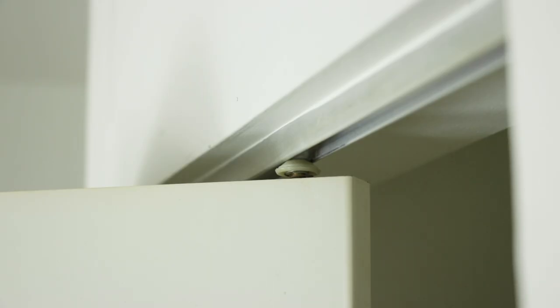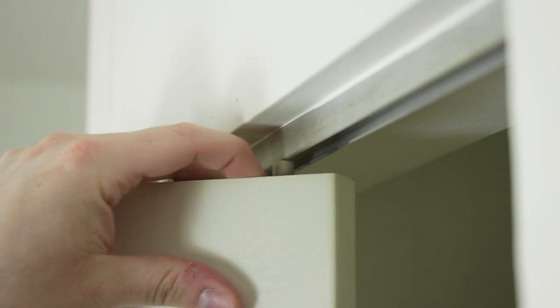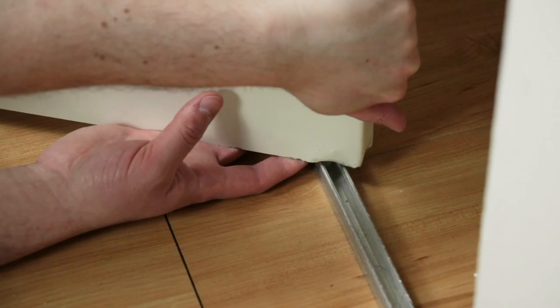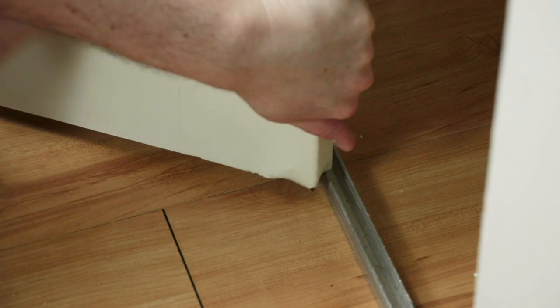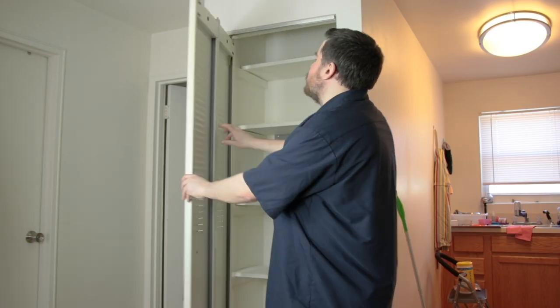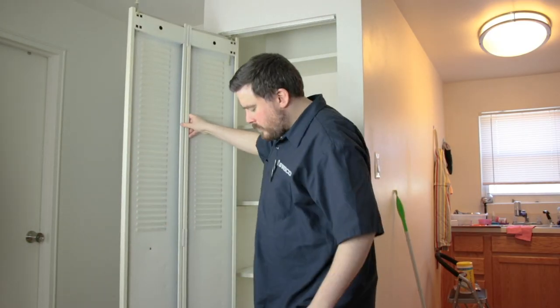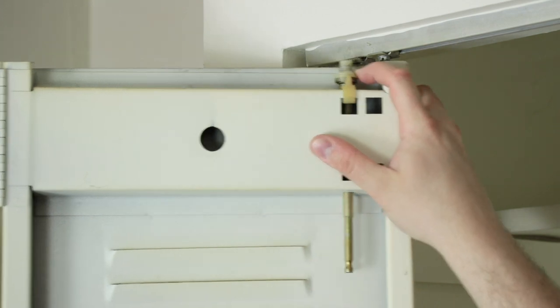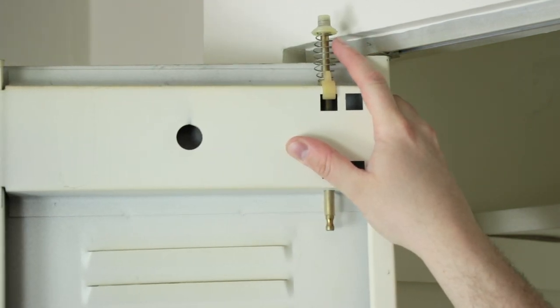To remove the door, start by pushing the top spring-loaded pin down and out of the track. Next, push the bottom pin up and off the track to carefully swing the door open. After you take out the remaining top pin, simply lift the door out of the bottom pivot bracket.